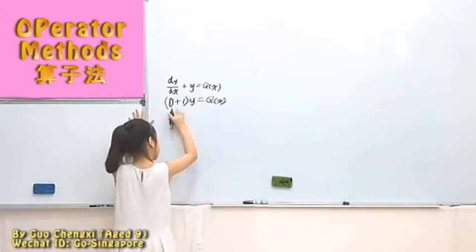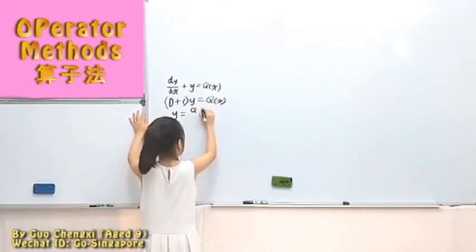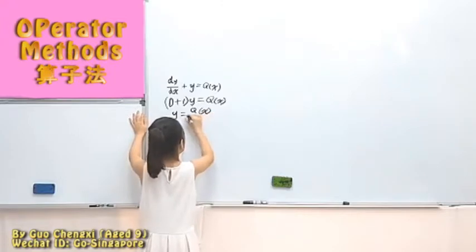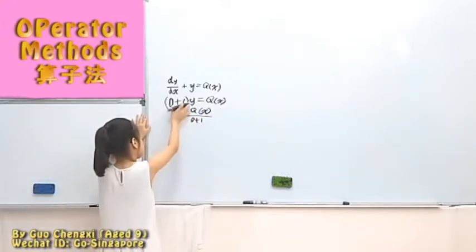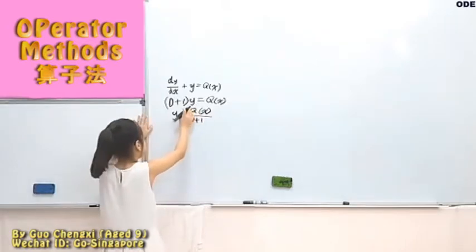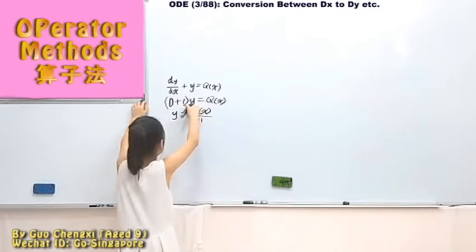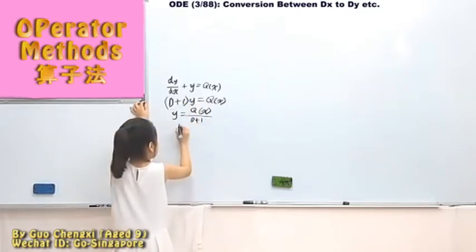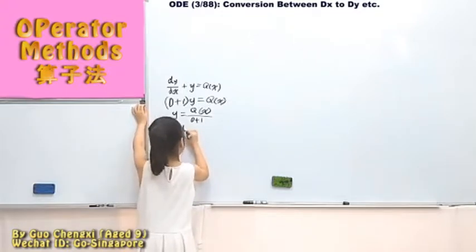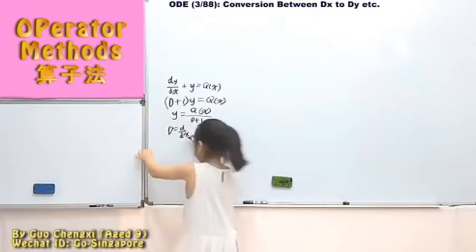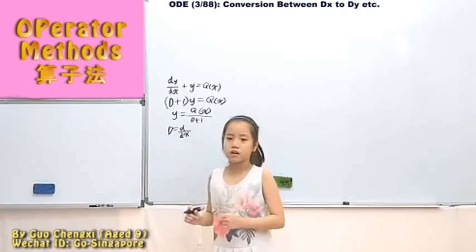What if we move this part to here? But it is impossible, because this part cannot move to here — this is a directive, and d is equal to d over dx. So it's impossible. But how can we do it?